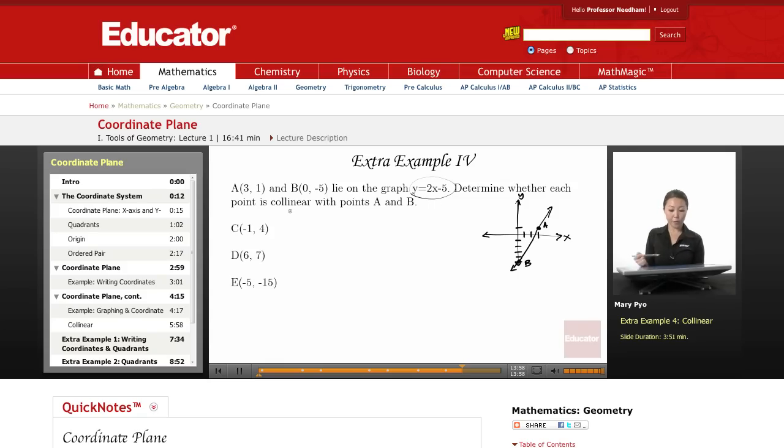Collinear means that they're going to be on the same line, right? So we're just going to see if these three points, since we know that these points A and B are on this line, you want to just see if these three points are going to also be on the line. And if they are, then they will be collinear with the points.